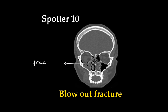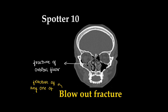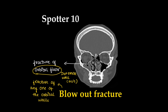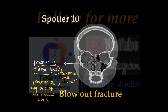In this case we can see fracture of the floor of the orbit, also called a blowout fracture. Fracture of any one of the walls of the orbit is called a blowout fracture, and the inferior wall is the most common fracture seen.